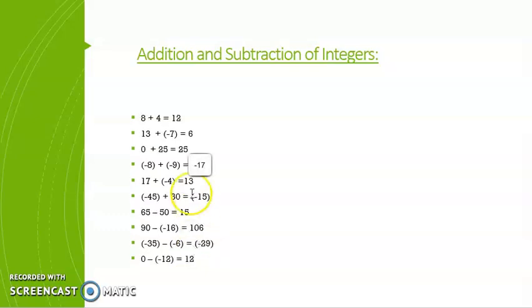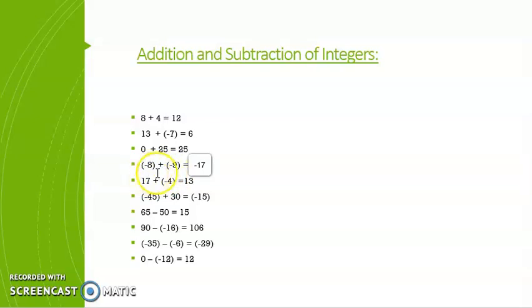Here are the answers for reference. 8 plus 4 is 12. 13 plus minus 7 is 6. 0 plus 25 is 25. For minus 8 plus minus 9: plus and minus gives minus, so we have minus 8 minus 9; the sign of the greater number is minus, so the answer is negative.